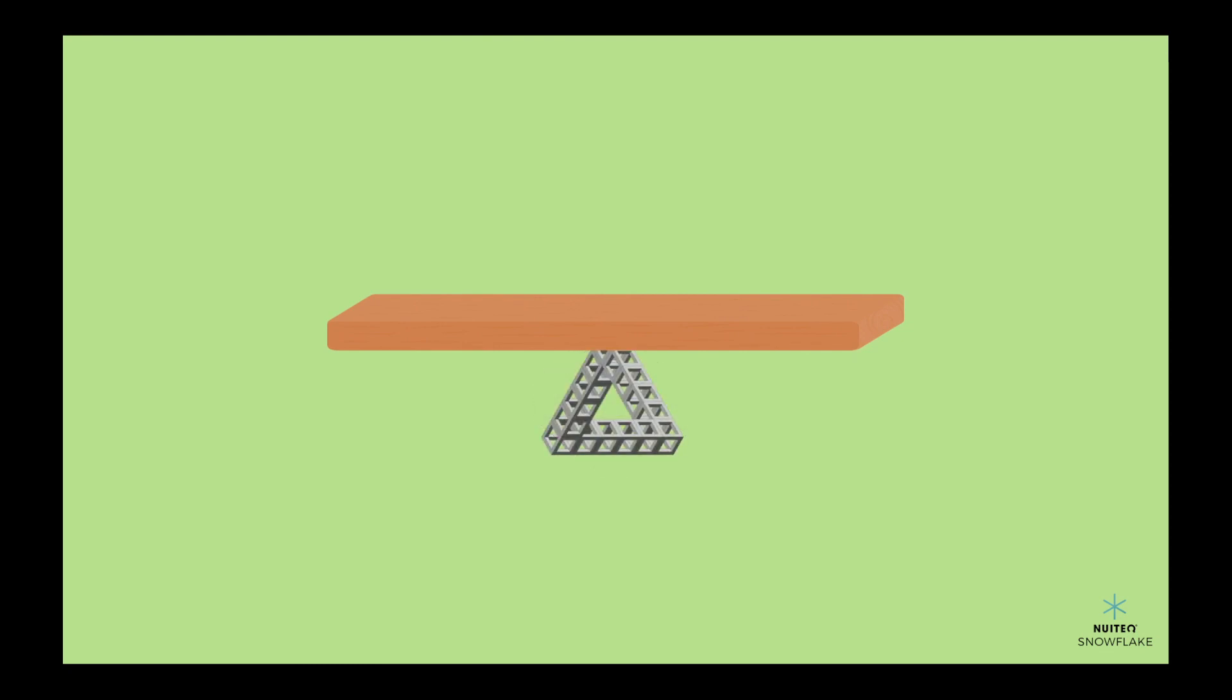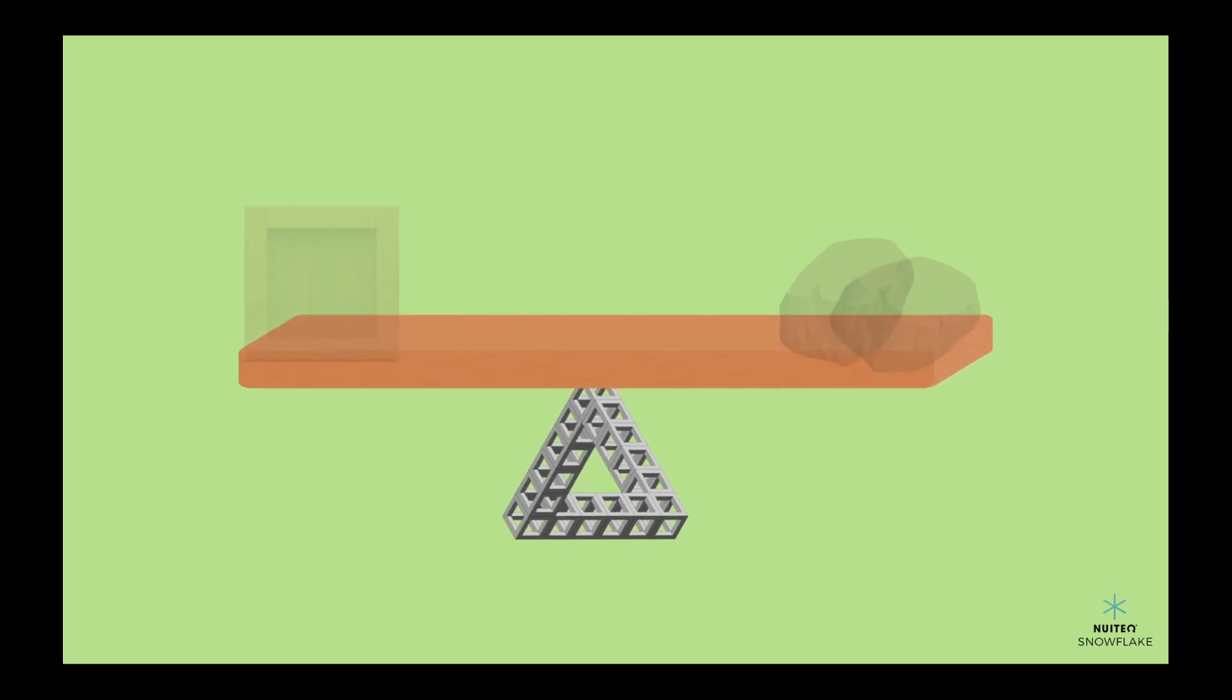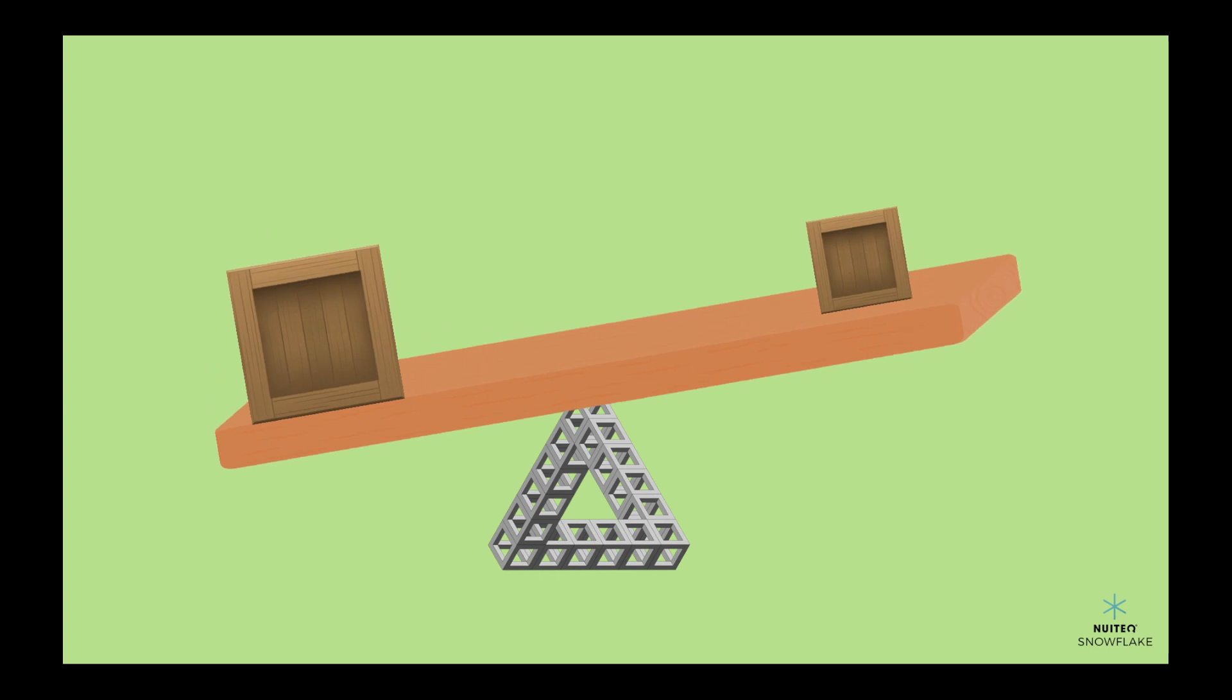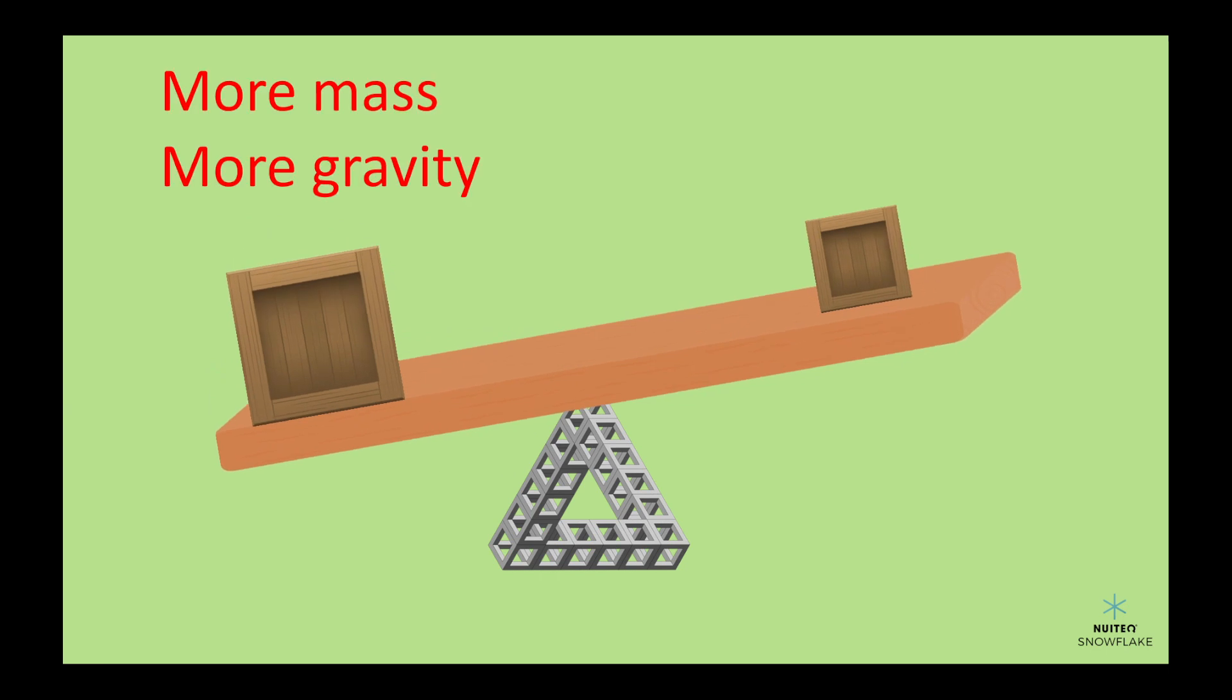To make a seesaw balance, you need to have objects of different masses on either side of the fulcrum. For example, if you have a heavy object on one side and a lighter object on the other side, the seesaw will tilt towards the heavy object. This is because the heavy object has more mass and more gravity, which pulls it down.